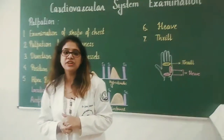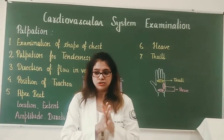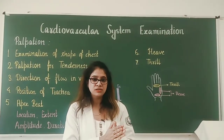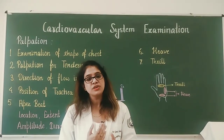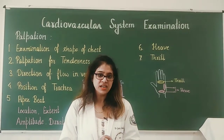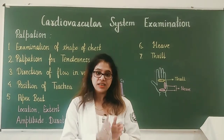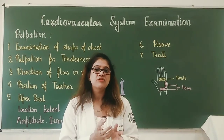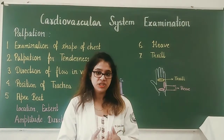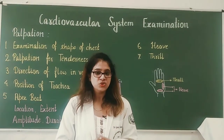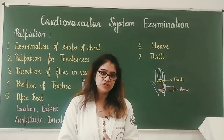Now, what are the causes of deviation of the trachea? If there is a pushing pathology such as pleural effusion or pneumothorax, the trachea will be pushed to the opposite side. If there is a pulling pathology such as lung fibrosis or collapse of the lung, the trachea will be shifted to the same side.